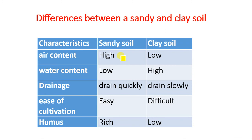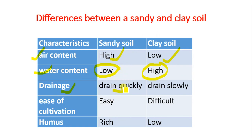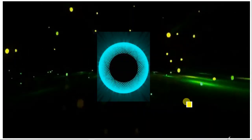Differences between sandy and clay soil: based on air content, sandy soil has larger particles so it has higher air content, while clay soil has low air content. For water content, sandy soil has low water content because water drains easily through the large air spaces, while clay soil holds a high amount of water. Sandy soil drains quickly while clay soil drains slowly. Sandy soil is easy to cultivate; clay soil is quite difficult. Sandy soil is rich in humus and organic content, while clay soil is low in humus.